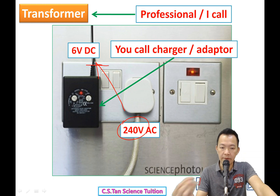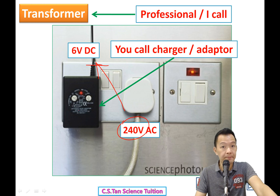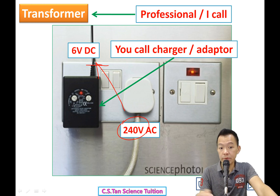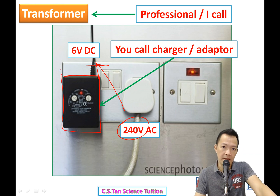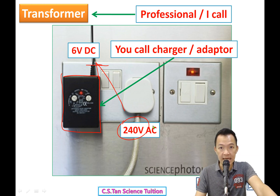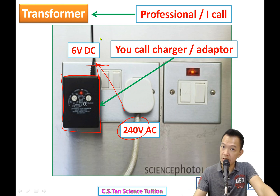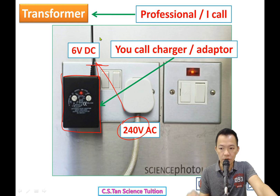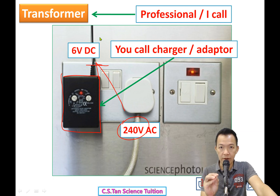You can adjust the transformer to get whatever voltage you need. Inside the adapter, besides the transformer, there is also a rectifier that converts AC to DC — we use diodes for that, as covered in the last video. That's what a transformer is.